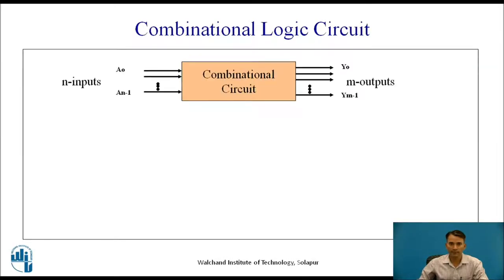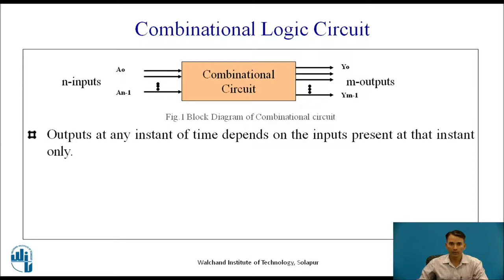What is a combinational logic circuit? A combinational logic circuit has n number of inputs — let us consider a0 to an-1 — and m number of outputs — let us consider y0 to ym-1. In a combinational logic circuit, outputs at any instant of time depend on the input present at that instant only, meaning that the output does not depend upon the previous or past values of input or output.